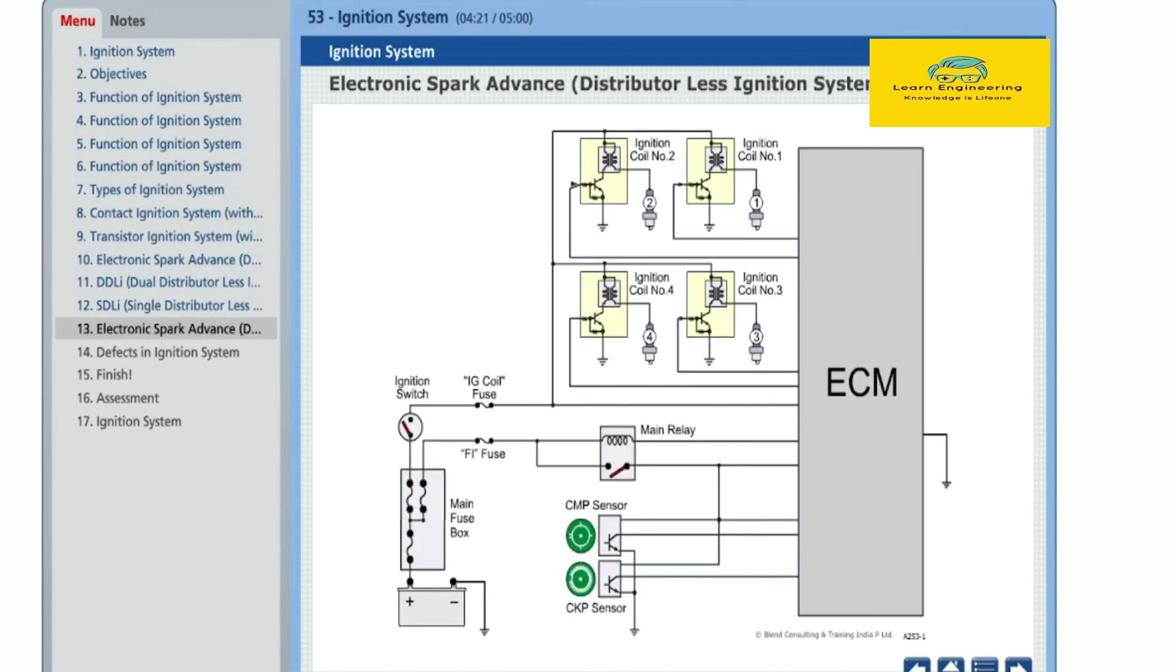Let us examine the function of electronic spark advance or distributor-less ignition system. This ignition system is fully electronic and is not equipped with distributor, pickup coil and signal rotor. In this system, the ECM gives signal directly to igniter fitted inside the ignition coil to cut off the current flowing through primary coil.